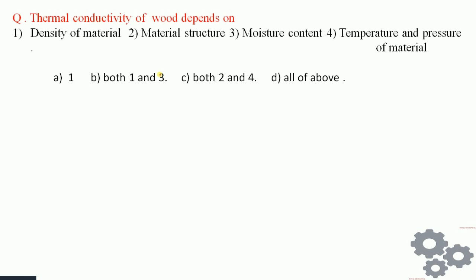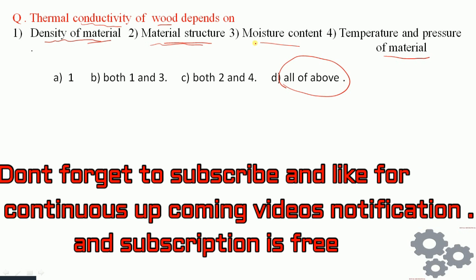Thermal conductivity of wood depends on: density of wood, metal structure of the wood, moisture content in the wood, or temperature and pressure of the material? Options are: one only, both one and three, both two and four, or all of the above. In wood, thermal conductivity depends on all of the above conditions — density, material structure, moisture content, and temperature and pressure. So the answer is all of the above.